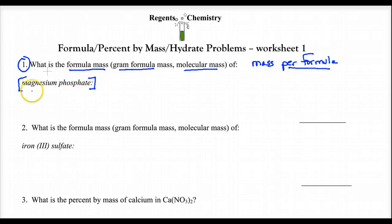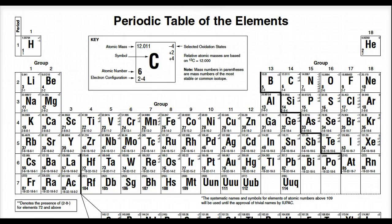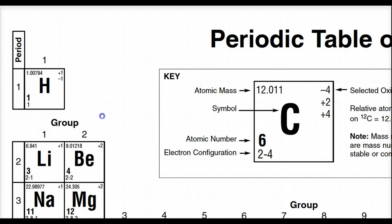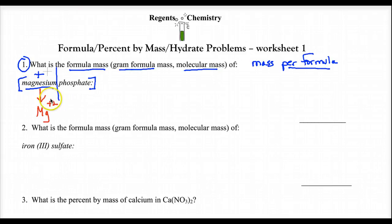So we have magnesium phosphate. Magnesium is Mg, and it goes in the positive position. We need to know the charge of Mg. Looking at the periodic table, magnesium is a very reactive metal, and it likes to become plus two. So we use plus two for magnesium.